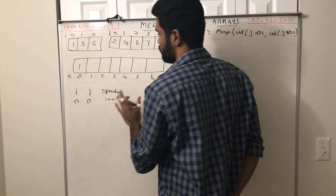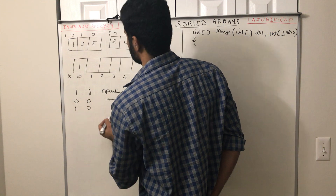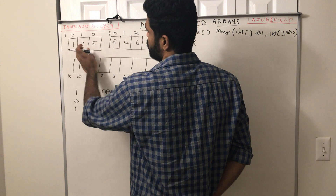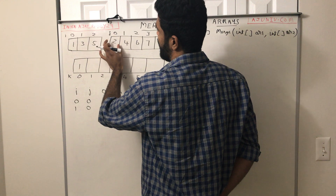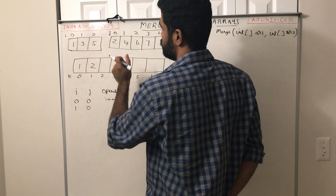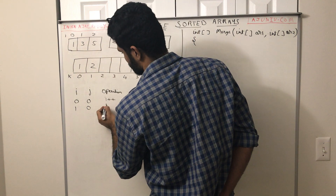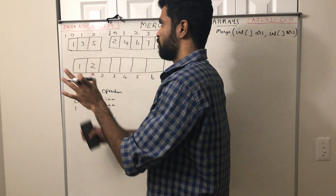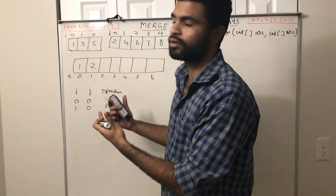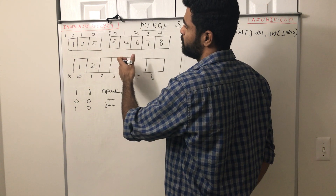We do nothing with J. In the next step, I is incremented to 1 and J is still at 0. Now we compare 3 and 2 — 2 is less than 3, so we add 2 to the new array. We added 2 from the second array which has the J pointer, so we increment J++. From whatever array you add the element, you have to increment that particular pointer.